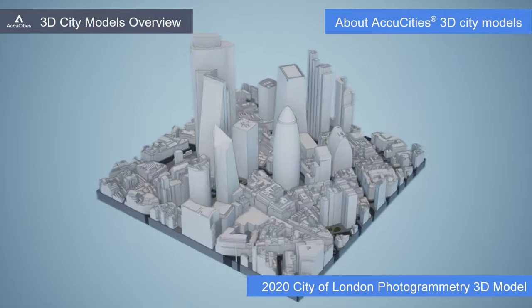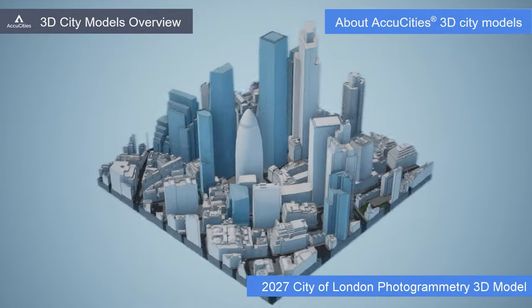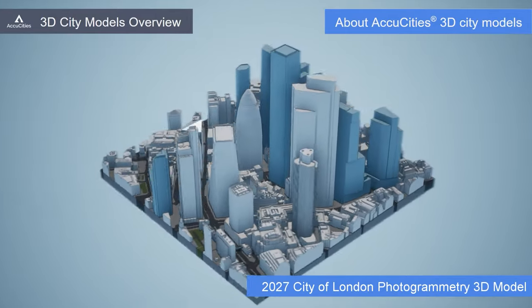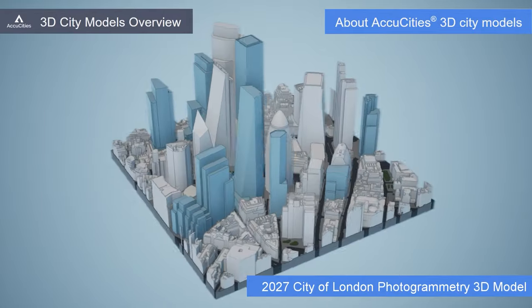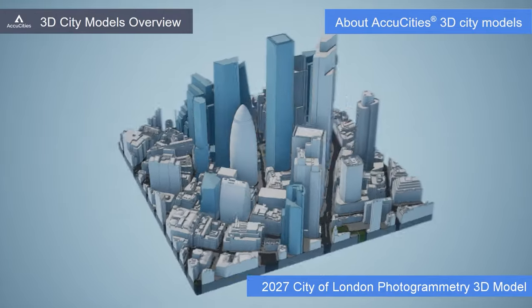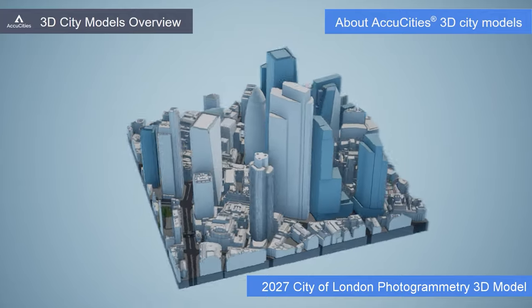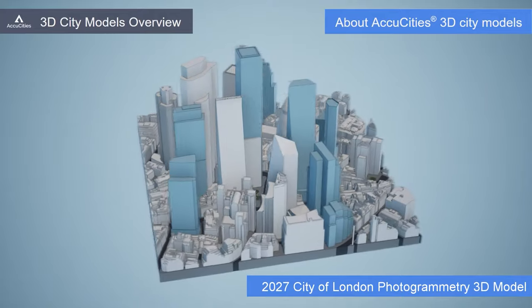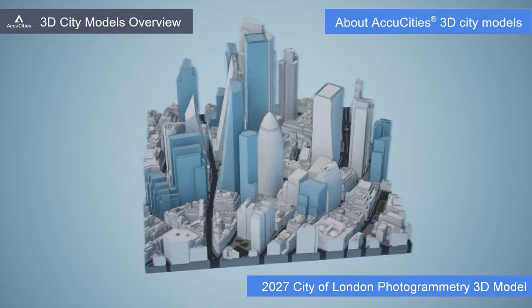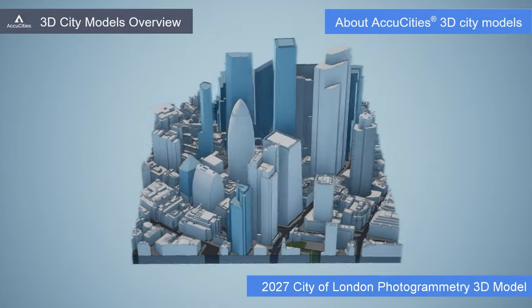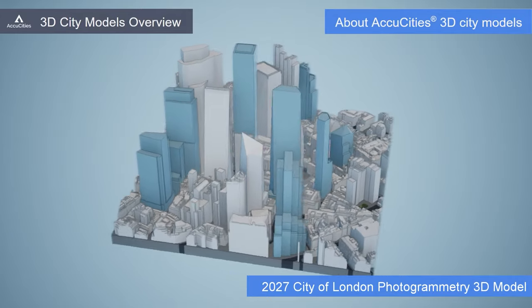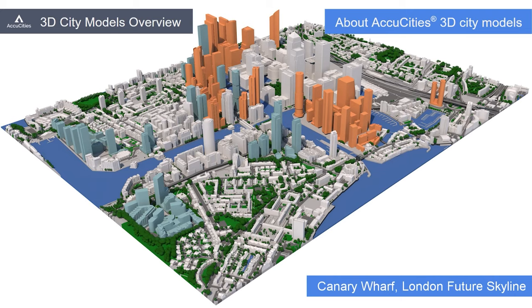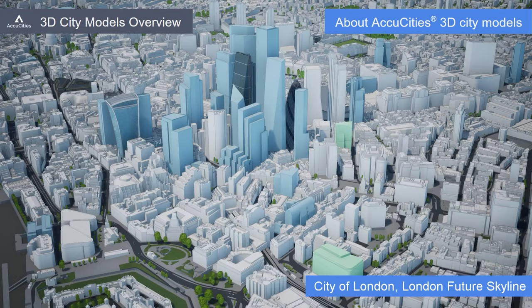We also capture a future skyline layer showing how the skyline will look in 2027. Future skyline layer buildings are either 3D modelled by us from planning applications or sent to us by architects or developers. All of these proposals already have planning permission, and although there might be further additions, this is how the London City skyline will look in 2027. Where available, we make the future skyline layer part of our 3D models as a standard.